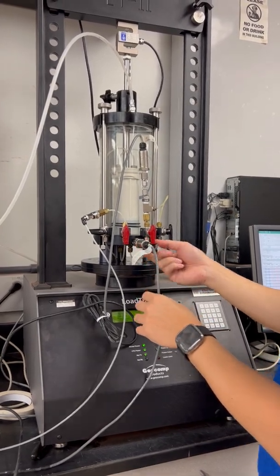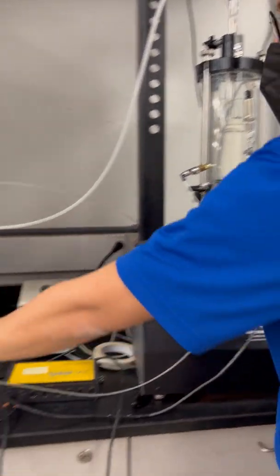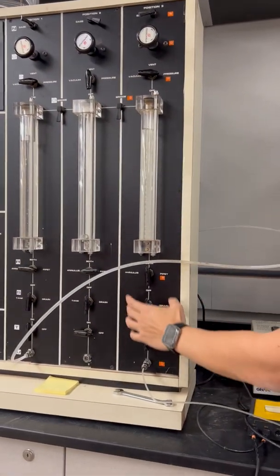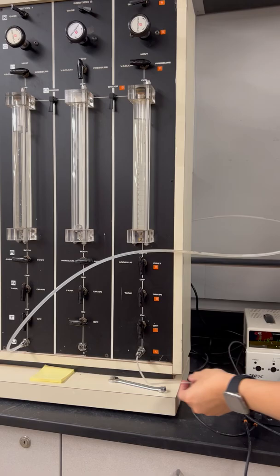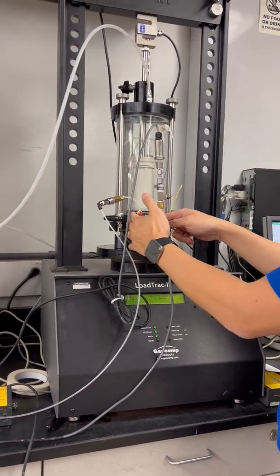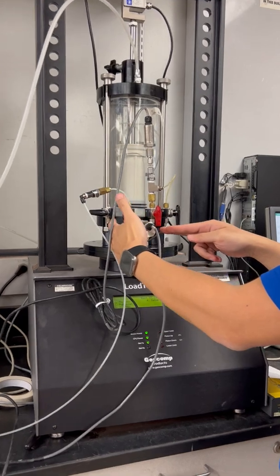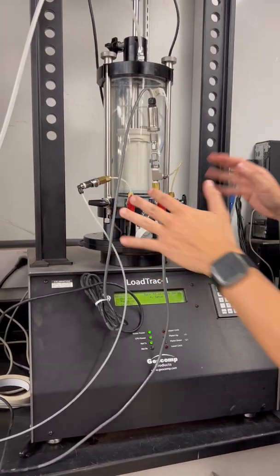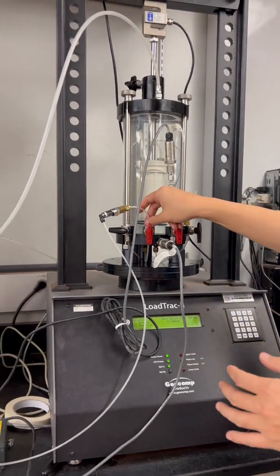Another one is the pore pressure panel here. This is the pressure source. The pressure source comes from here, goes all the way into this valve. This valve is the one that connects to the bottom of the specimen.